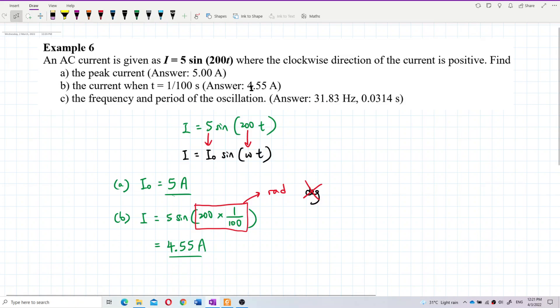Peak current is 5, the current here is 4.55, so that's correct. Now how about the frequency and period of the oscillation? From the expression, that's the omega. You can find omega is 200, so omega you can change to 2 pi f or 2 pi over period.